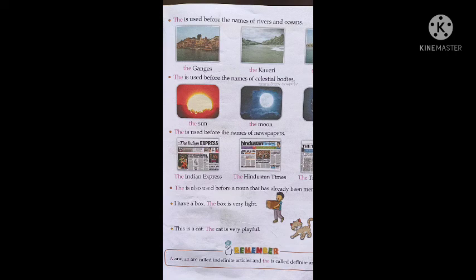Next, 'the' is used before the names of celestial bodies — hum log 'the' ka prayog kahan pe karein ge? Celestial body ke pahle. Jaise ki the Sun, the Moon, the Earth — in ke pahle hum log 'the' ka prayog karein ge.